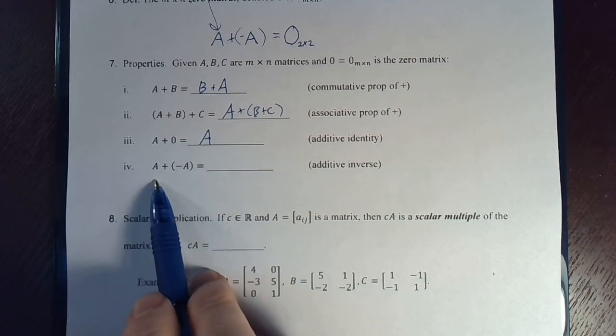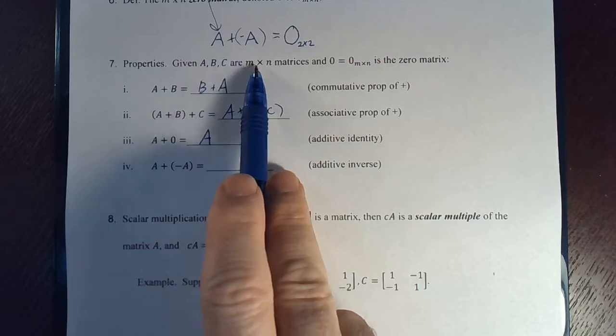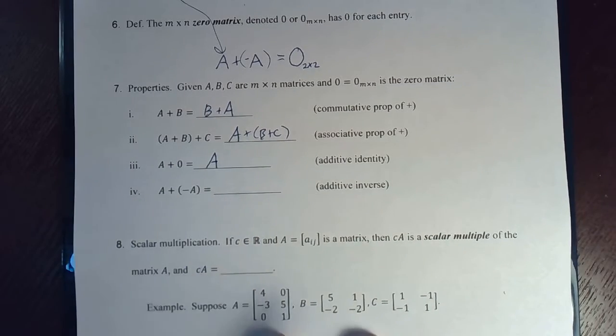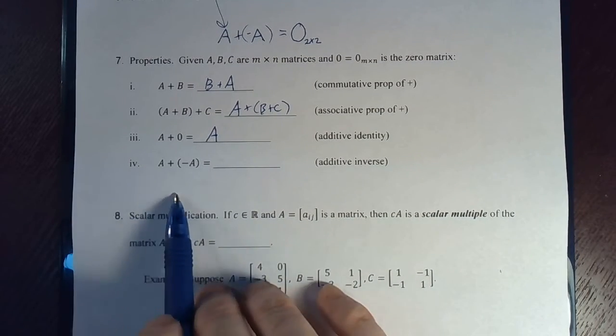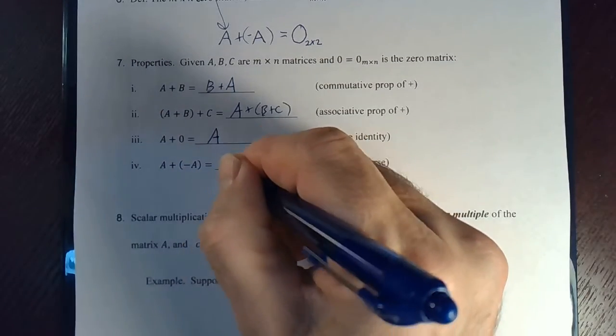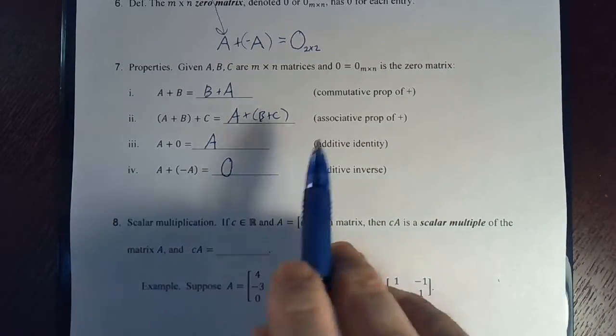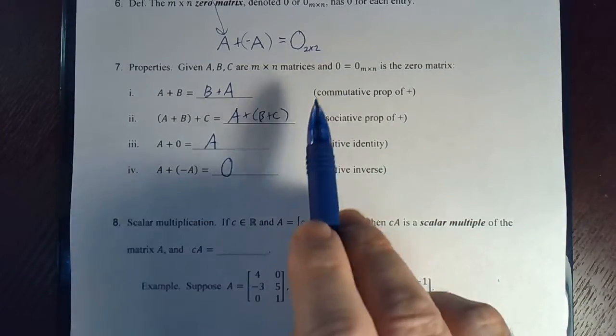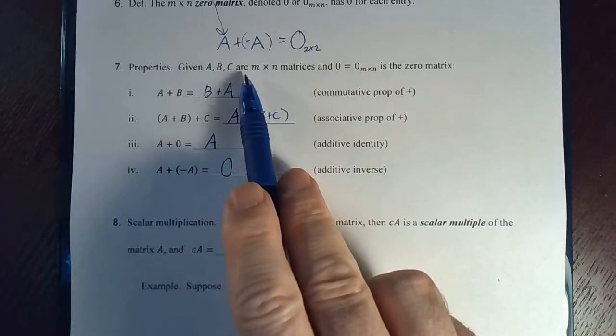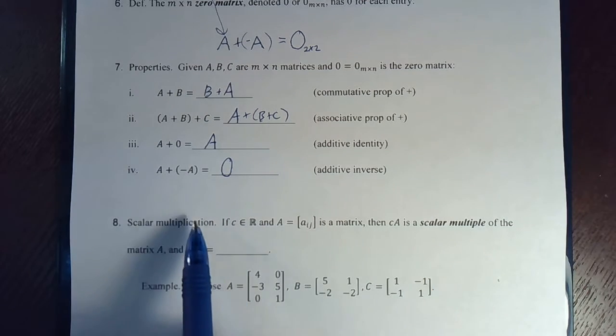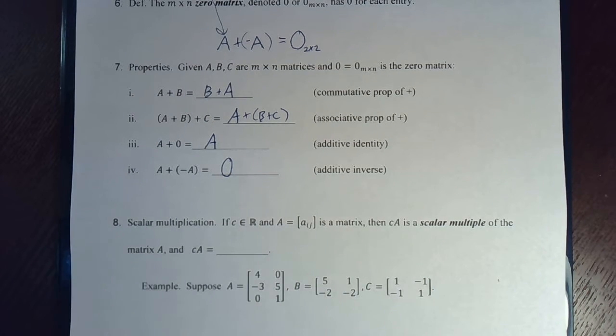And we already looked at this one up here. So we already know the answer to this. A plus negative A is equal to the zero matrix. And I don't need to put the M by N. We already defined it to be the M. We know that this zero matrix is the same size as A, B, and C. So this works out perfectly.